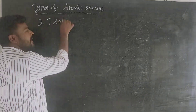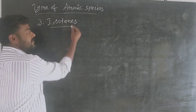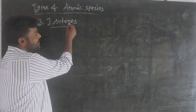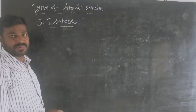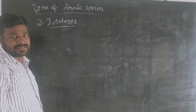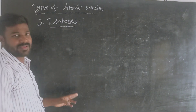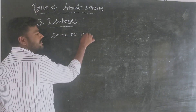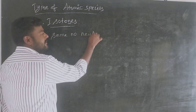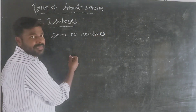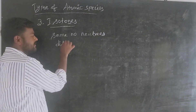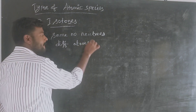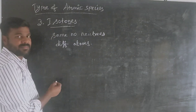The next type is isotones. Isotones have the same number of neutrons but are different elements — different atoms.